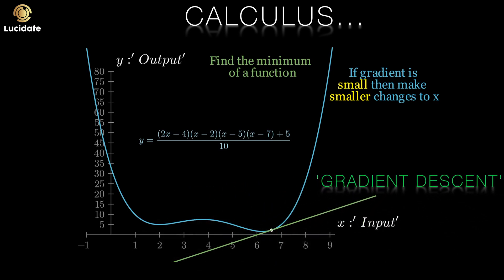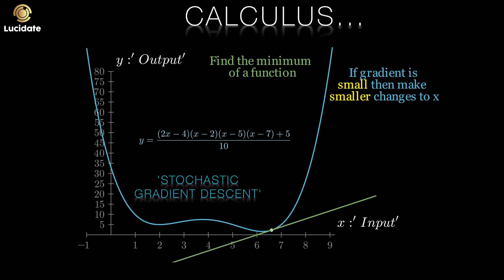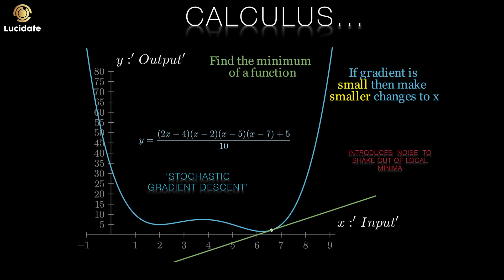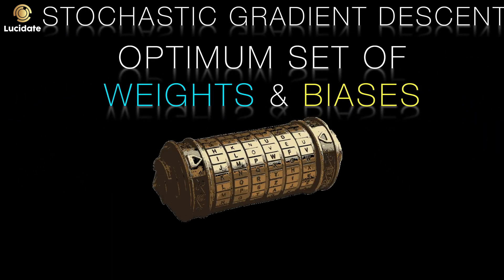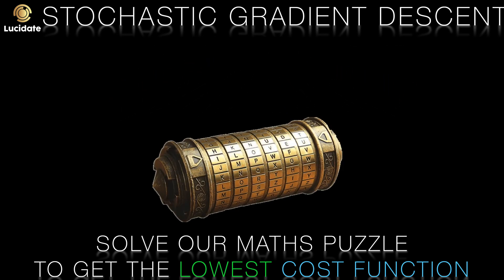One evident problem with gradient descent is that it can get stuck in local minima. As you can see, there is another minimum on the chart where x equals 2. One way of avoiding getting stuck in local minima is to use a technique called stochastic gradient descent, or SGD. Here, rather than computing the exact gradient using all training examples, we take a smaller sample of the training set. This gives us an estimate of the true gradient, but with enough noise and randomness to jolt it out of any local minima. So now we have a strategy — stochastic gradient descent — that will help us choose the optimum set of weights and biases to get our cost function as low as we can.